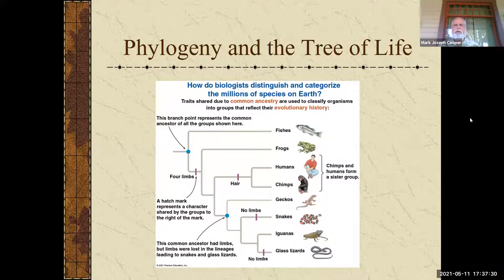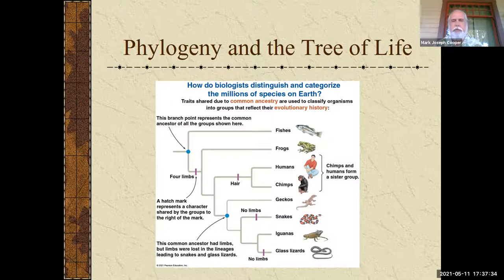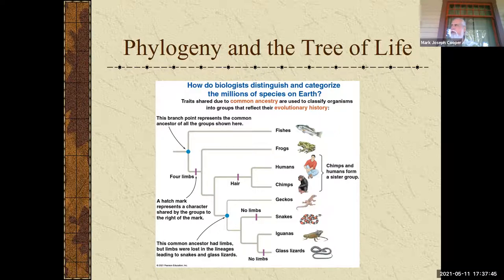For our last recording, we're going to talk about phylogeny and the tree of life. In Bio 2 we do this more, but I want you to get an understanding of what we're trying to do. It's really taking all the species on the planet and trying to fit them into this tree of life — where do they evolve, who are their closest ancestors, and those kinds of information.